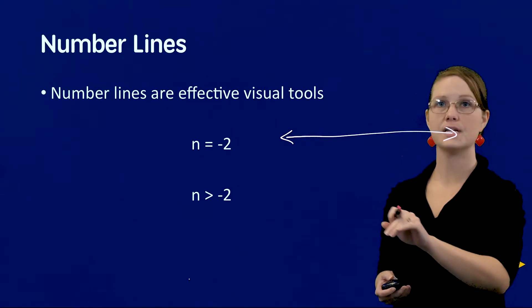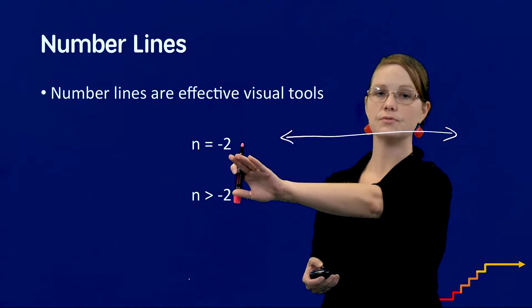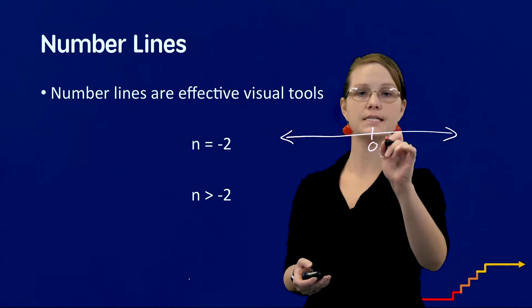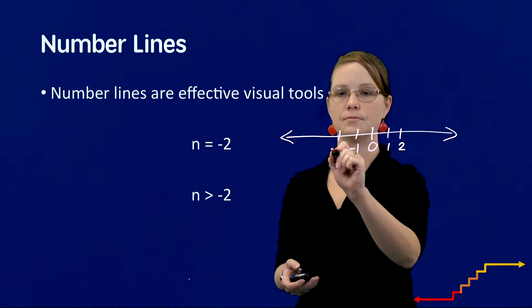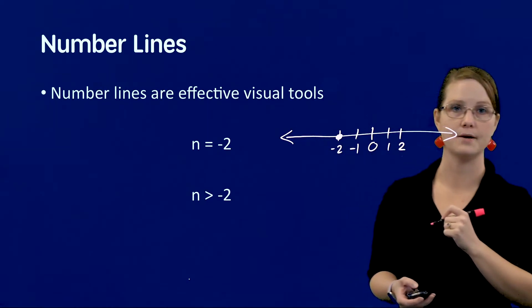And I'm going to represent this equation here, n equals negative 2, to ground students. So I'll start by showing where 0 is, I might start by showing some positive numbers, then I'm going to show negative 2 right there.